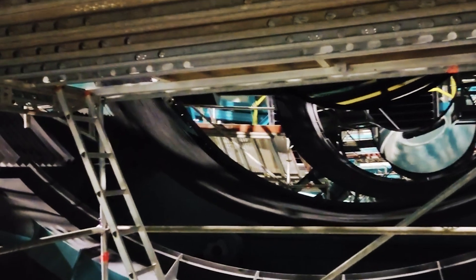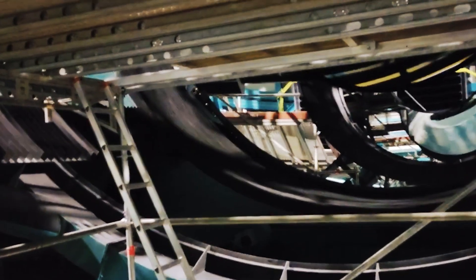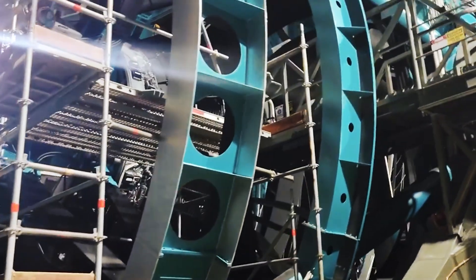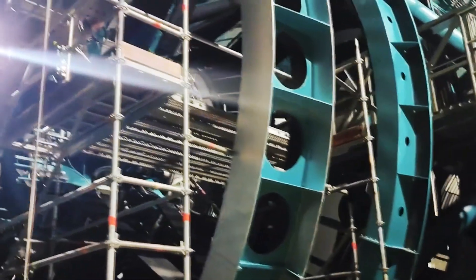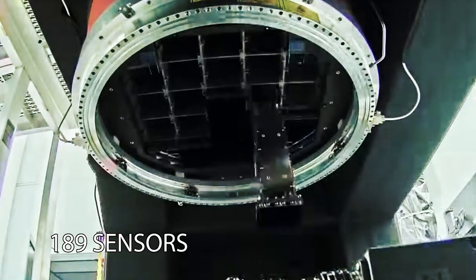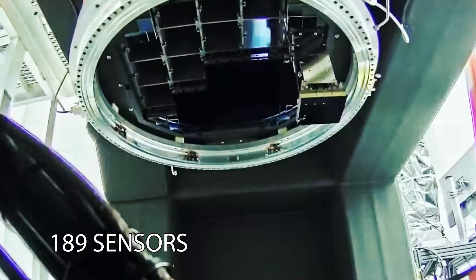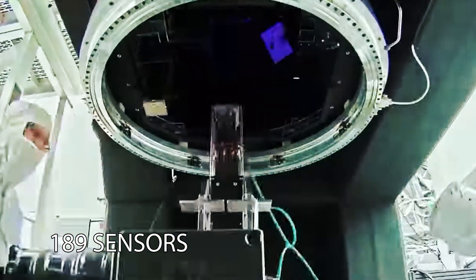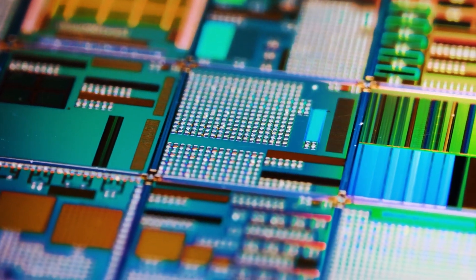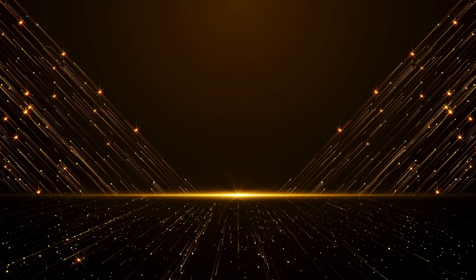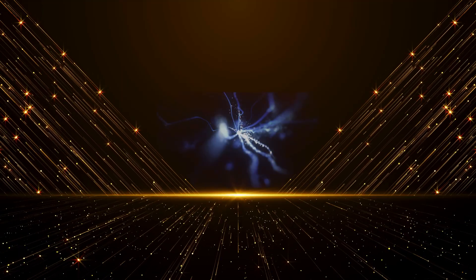But its heart? Its heart is a digital sensor unlike any other, a circular plane two feet wide, paved with 189 advanced sensors, or CCDs. Each one is a tiny slab of silicon that converts particles of light into a whisper of electricity. The gap between them is less than the width of a human hair.